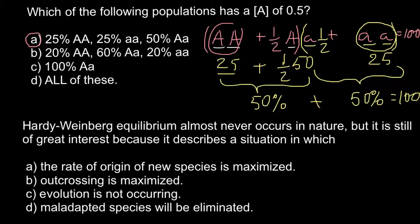The frequency of the dominant allele is 50%, and 50% and 0.5 are the same number on different scales. 0.5 is on a scale of 0 to 1, while 50% is on a scale of 0 to 100%. So 1 equals 100% and 0.5 equals 50%.